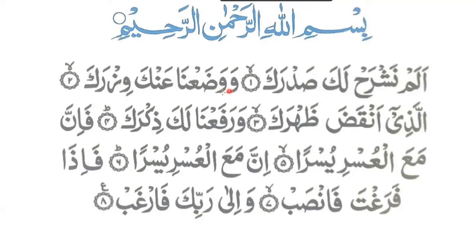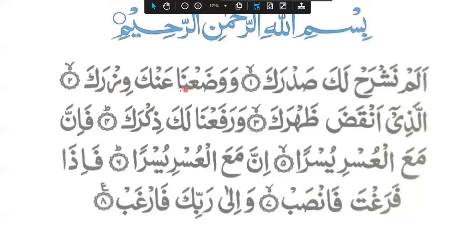Next ayat: Wa wada'na anka wizrak. 'Wa wa' then 'da'na' — it joins with the ayin sukun. 'Da'na' — noon alif fatah, two counts, 'na'. Then 'an-ka': fathah, noon sukun — 'an', then 'ka'. Then 'wizz' — wa joins with the z — 'wizz', then 'rok'. Full ayat: Wa wada'na anka wizrak.